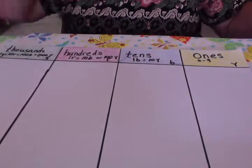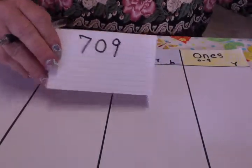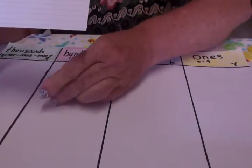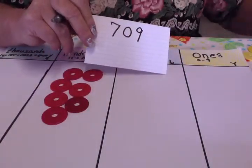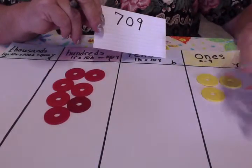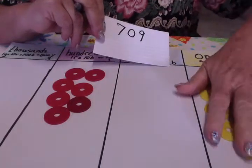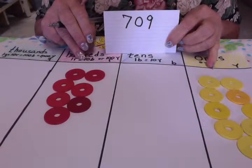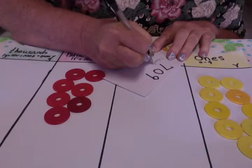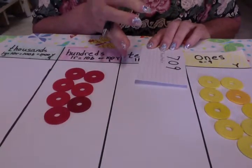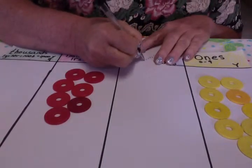Then we went up into the hundreds place, and I got a little sneaky on the first one — I gave you 709. So I need to put 700 in here. While I'm doing that, see if you can think how I would end up writing this number out. I don't put anything in the tens, and I put 9 here in the ones. We have three place values, so I'm going to have to have three numbers written in there. That's my 709 — seven hundreds plus no tens, so I'm going to write zero tens, plus nine ones.